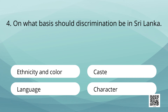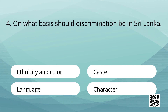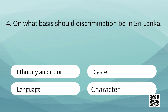On what basis is discrimination done in Sri Lanka? Options: 1. Ethnicity and colour. 2. Caste. 3. Language. 4. Character. Answer is language.